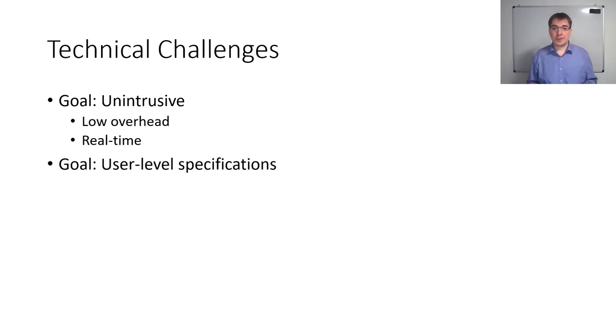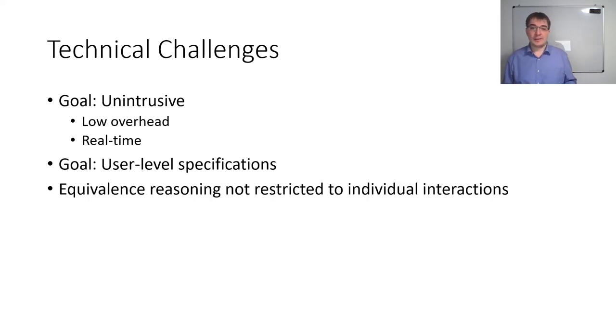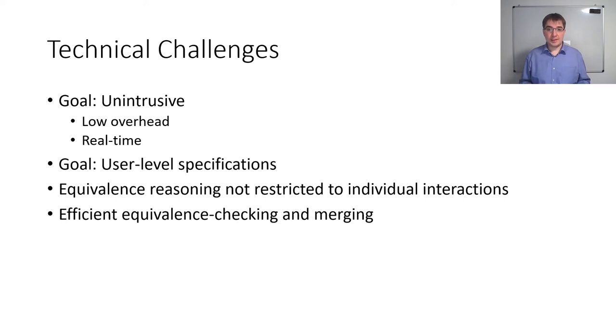And second, we only want user level specifications for those cases where the monitored variants might differ in their behavior, which is different from what the monitor will actually observe in terms of their interactions with the environment. In particular, there is equivalence reasoning that needs to be done on these interactions, because they cannot necessarily be mapped one-to-one between the individual programs. For example, one program might write a big file in one swoop, when another program might write the same data to the same file in lots of smaller writes, both of which are equivalent, but that needs to be recognized by the monitor. All of this needs to be done efficiently, while also avoiding deadlocks due to trying to ensure isolation.